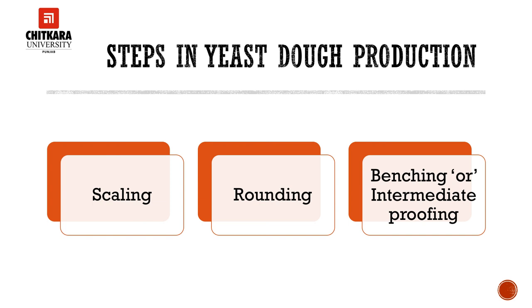The next step is rounding. After scaling, the pieces of dough are shaped into smooth round balls. This procedure forms a kind of skin by stretching the gluten on the outside of the dough with smooth layers. Rounding simplifies the later shaping of the dough and also helps retain gases produced by the yeast.